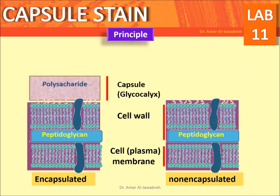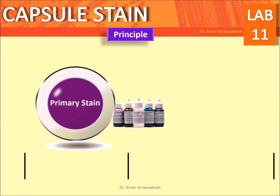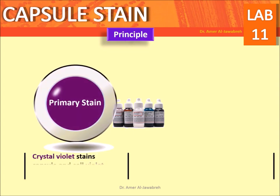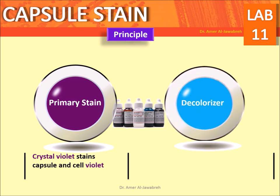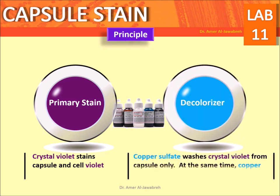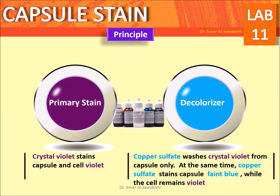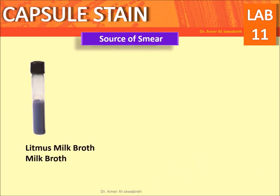Crystal violet stains both the capsule and the cell violet. Copper sulfate then washes crystal violet from the capsule only, while simultaneously staining the capsule a faint blue. The cell remains violet.